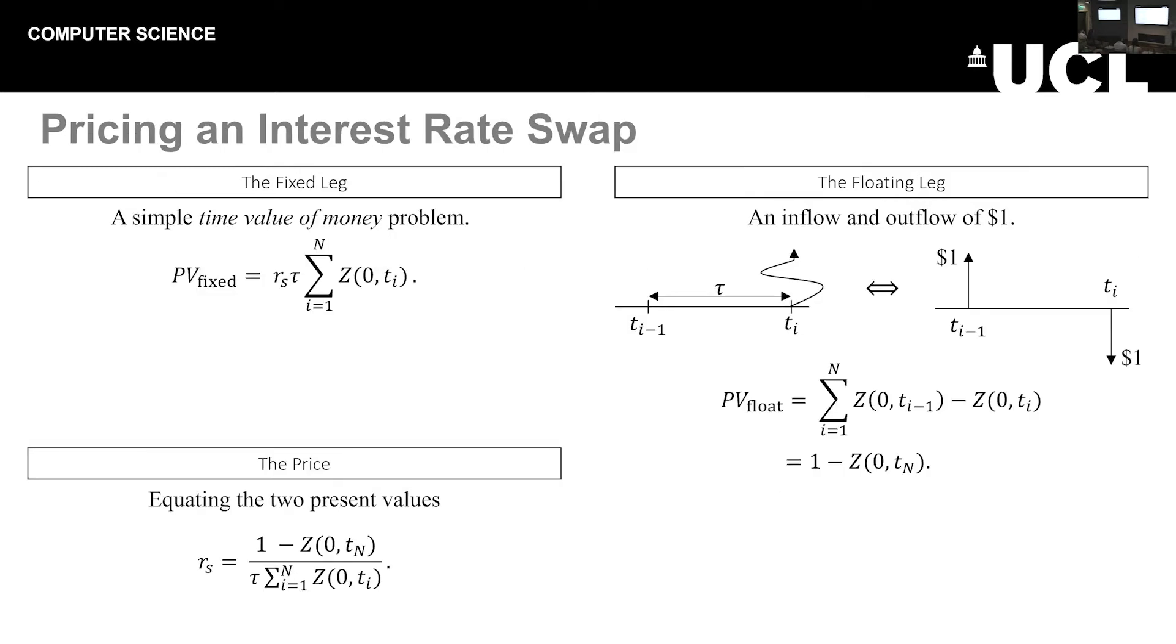So how do we go about pricing such a contract? Well, the fixed rate is, of course, known. So pricing the fixed leg simply boils down to discounting a series of cash flows. So let's introduce some notation. We have R_S as our fixed rate of the swap, the price of the swap. We have the time between interest rate payments, that we'll denote as tau. And then it simply becomes a case of summing the discount factors. Nothing too complicated there.